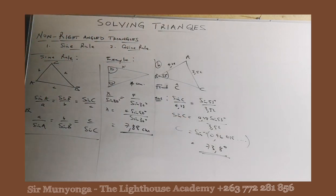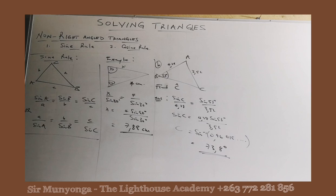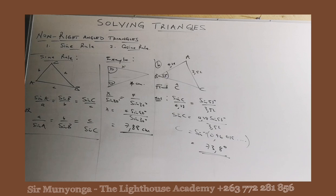So that's how you make use of the sine rule. It's only applicable in cases where you have at least one complete pair — that is the limitation of the sine rule. If you don't have a complete pair, then you are required to use another method. Check episode two where we make use of the cosine rule, because we've seen the limitations that the sine rule carries.